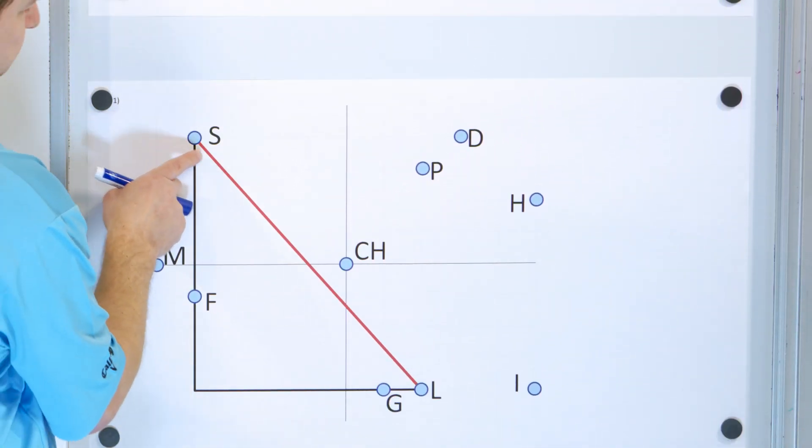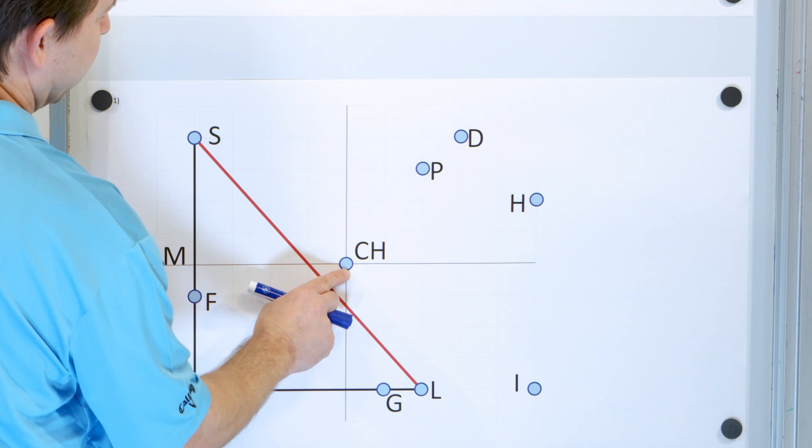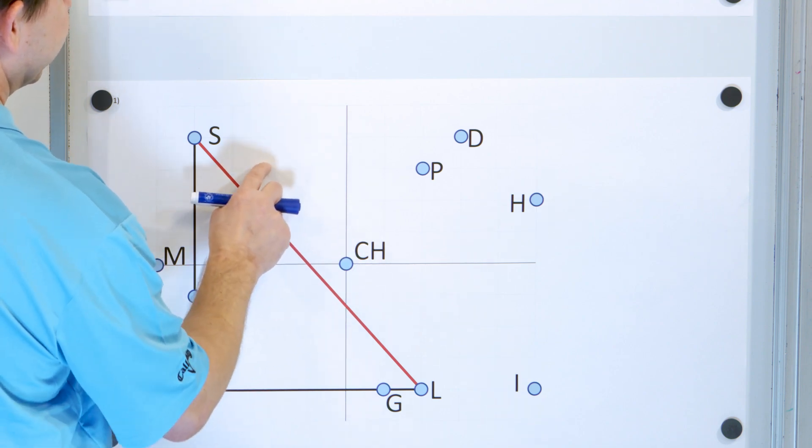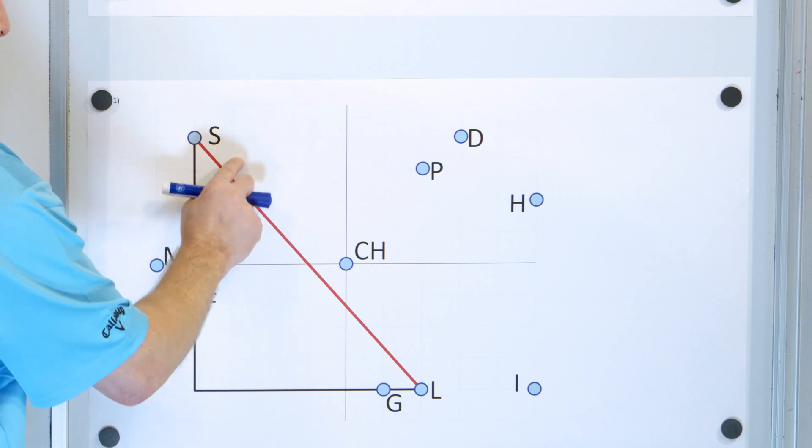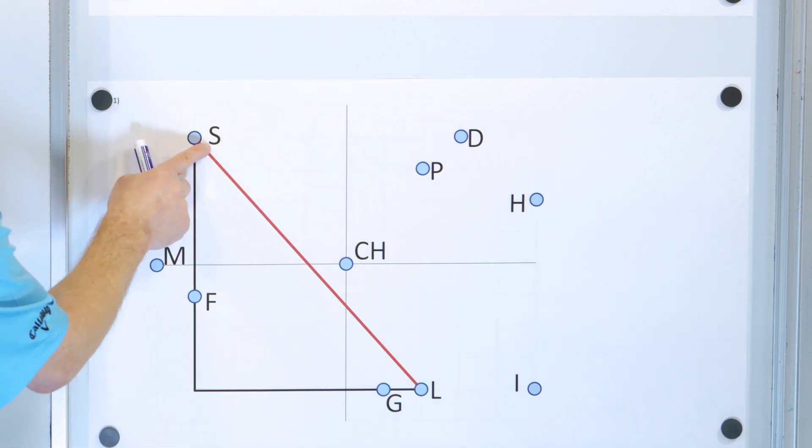So here is the school, here is the library, here is city hall in the center of town. And you can see I have this grid system set up. These are one kilometer increments. And so we're trying to figure out the straight line distance as the bird flies from the school to the library. So how do we proceed?